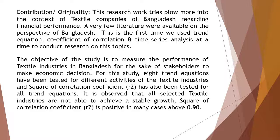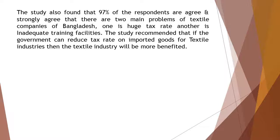It is observed that all selected textile industries are not able to achieve stable growth. The square of correlation coefficient, R², is positive in many cases above 0.90. The study also found that 97% of the respondents agree and strongly agree that there are two main problems of textile companies of Bangladesh: one is huge tax rate and the other is inadequate training facilities.